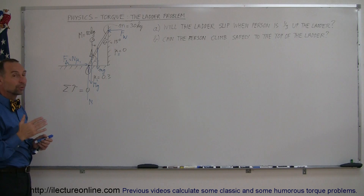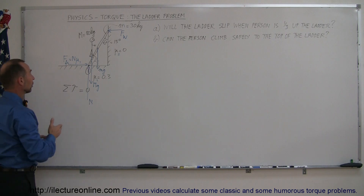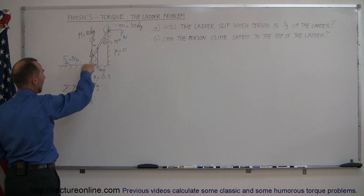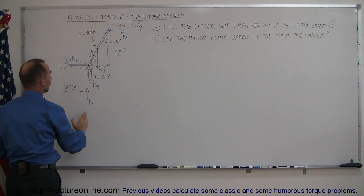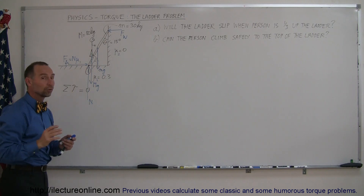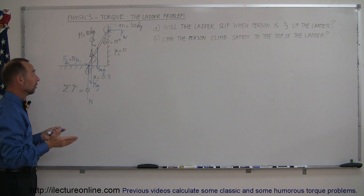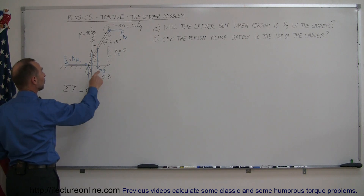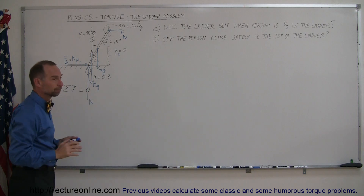Notice that there are three forces in the vertical direction: the weight of the ladder, the weight of the person — both acting downward — and then the normal force pushing upward. Those three forces must add up to zero, which means that the normal force is equal to both the weight of the ladder and the weight of the person.